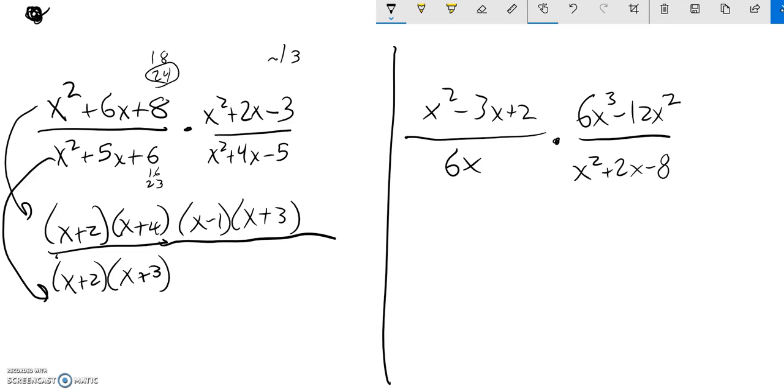Then this one, negative 5. 1 and 5. So 5 and negative 1. This factors to x minus 1 times x plus 5.